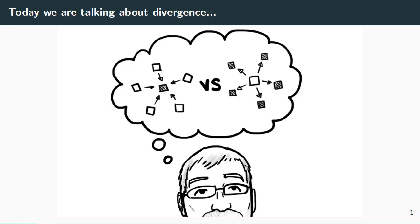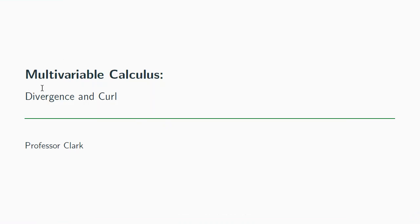Hey, Dr. Clark here as always, and in this video we're going to start learning about divergence and curl. Let's get started. Divergence and curl are two properties that a vector field has, and we're going to start with divergence and then in the next video we'll take a look at curl.